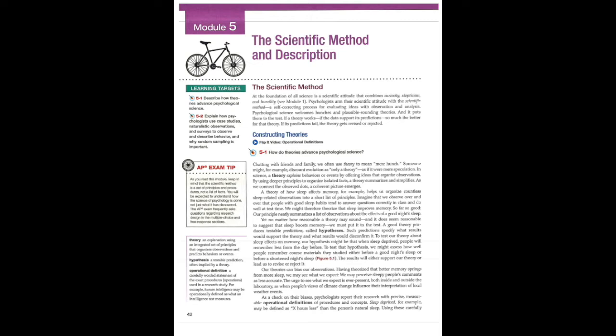Constructing Theories. Chatting with friends and family, we also use theory to mean mere hunch. Someone might, for example, discount evolution as only a theory, as if it were mere speculation. In science, a theory explains behaviors or events by offering ideas that organize observations. By using deeper principles to organize isolated facts, a theory summarizes and simplifies. As we connect the observed dots, a coherent picture emerges.